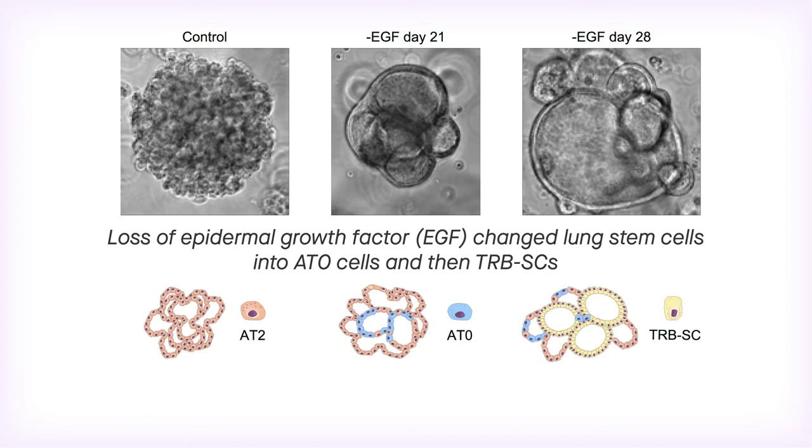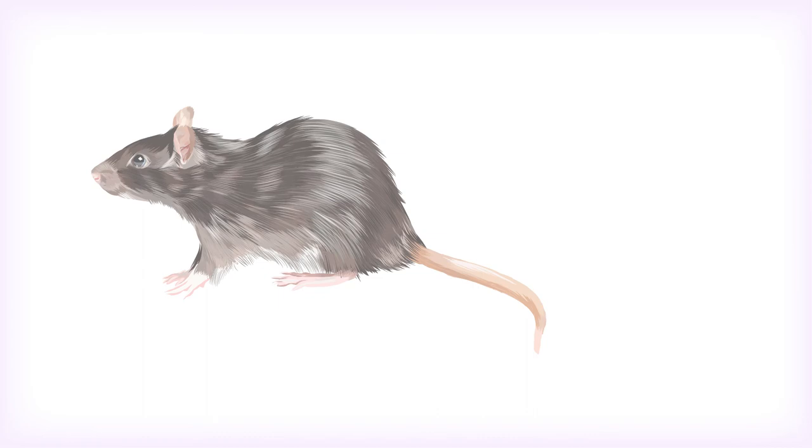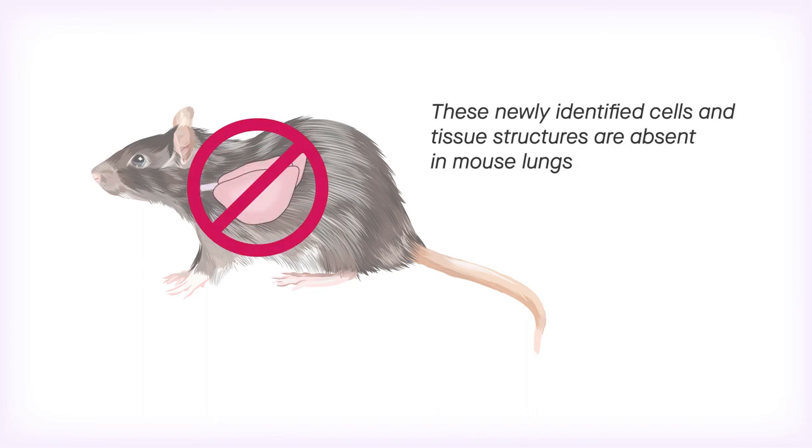These organoids were found to organize into 3D cysts, resembling structures found in human lung disease. Interestingly, the newly identified cells and tissue structures are completely absent in mouse lungs, a model system commonly used to study lung diseases.